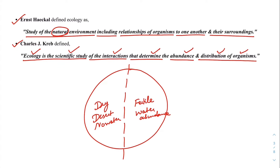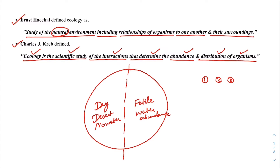Organisms one and two choose to live in the fertile soil, while organism three does not live in fertile soil but instead lives in the desert. So organisms one and two are in the fertile, water-abundant area.